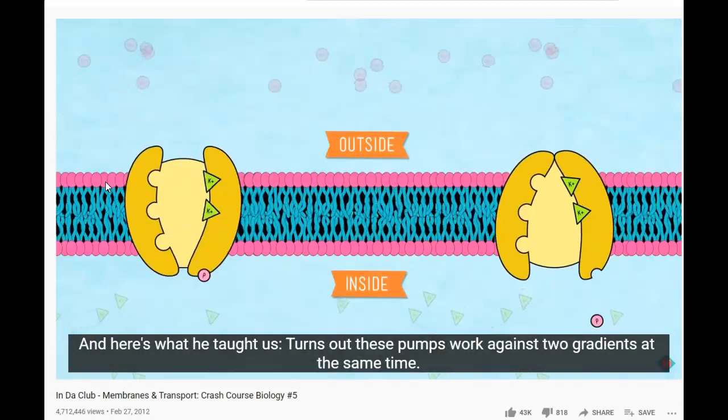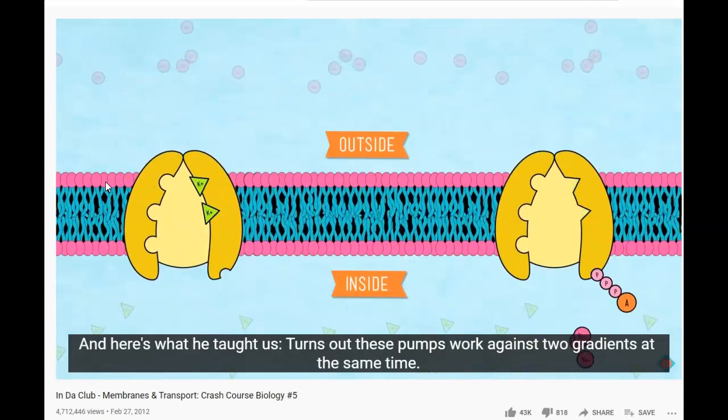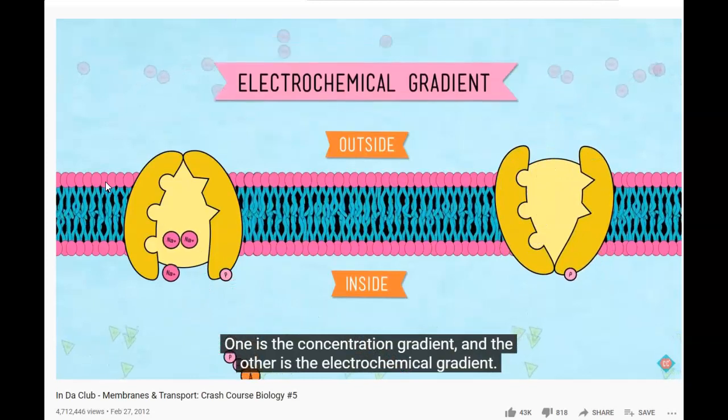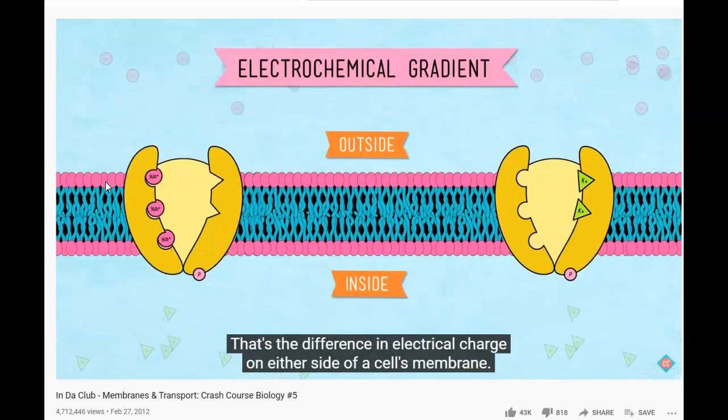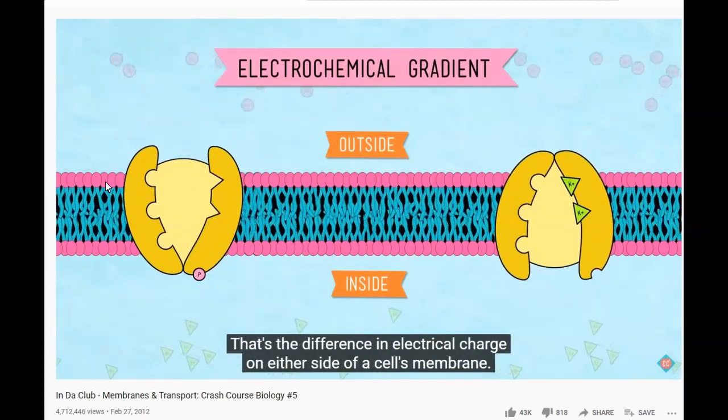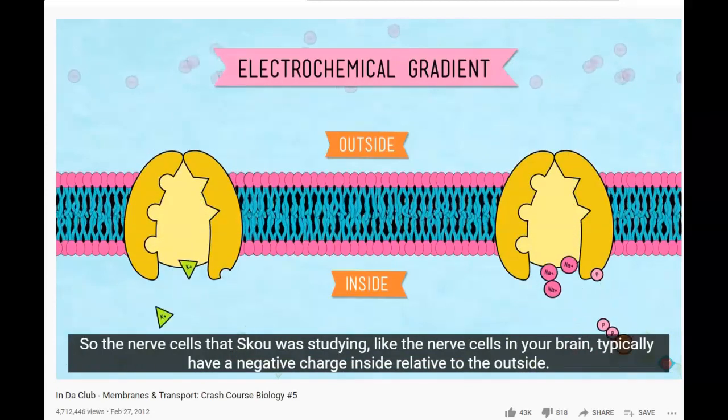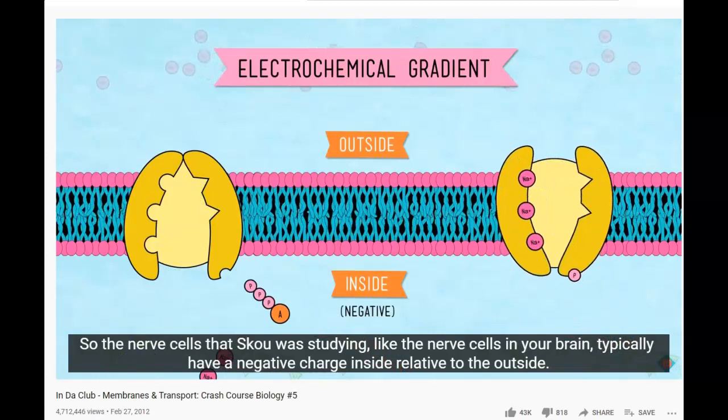Here's what he taught us: these pumps work against two gradients at the same time, the concentration gradient and the electrochemical gradient. That's the difference in electrical charge on either side of the cell membrane. The nerve cells that Skoo was studying, like nerve cells in your brain, typically have a negative charge inside relative to the outside.